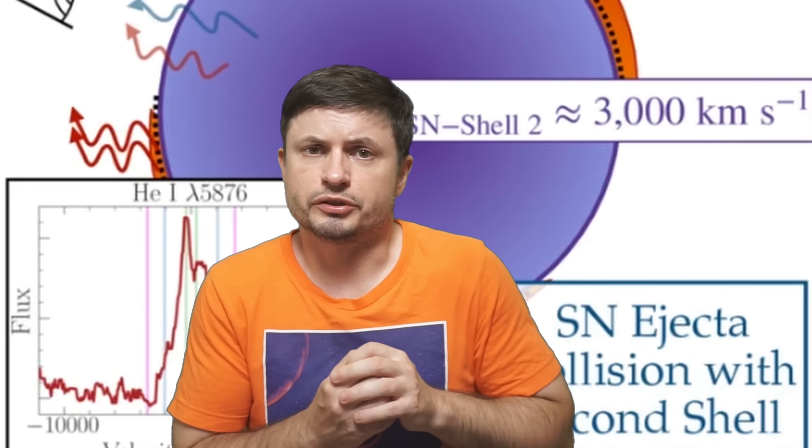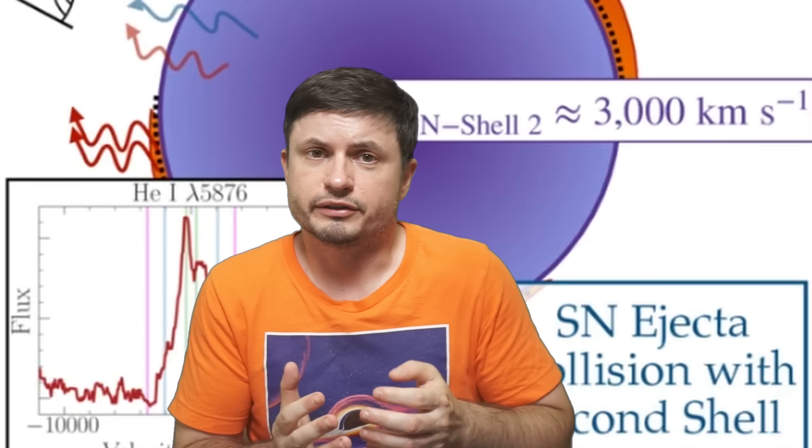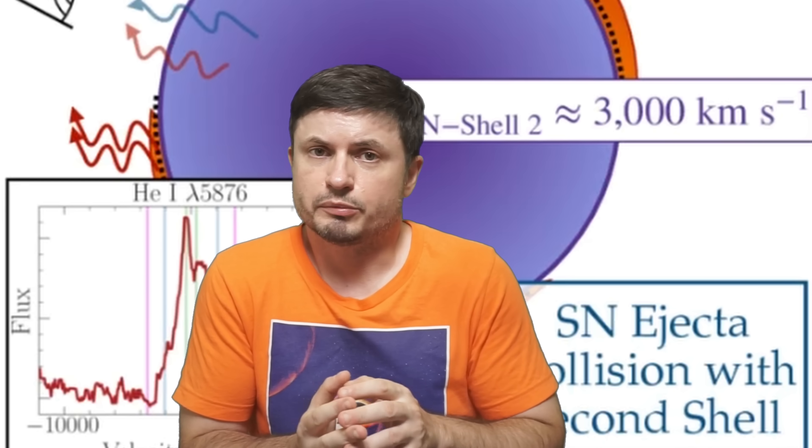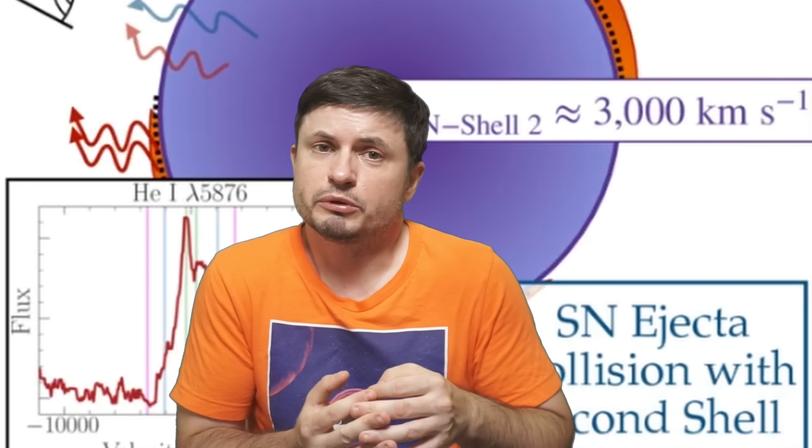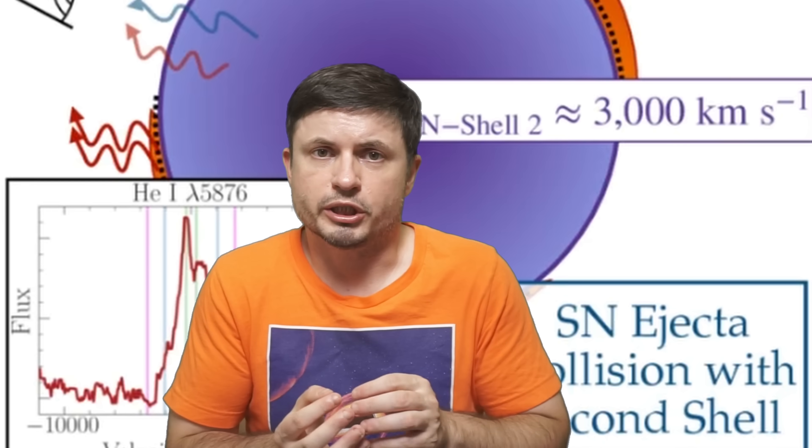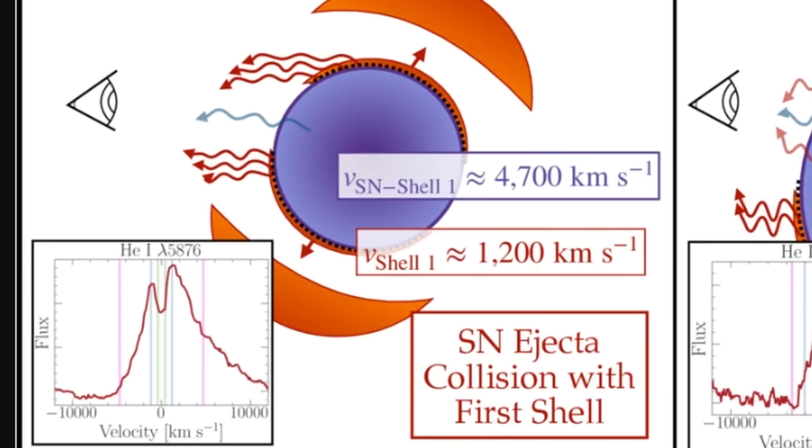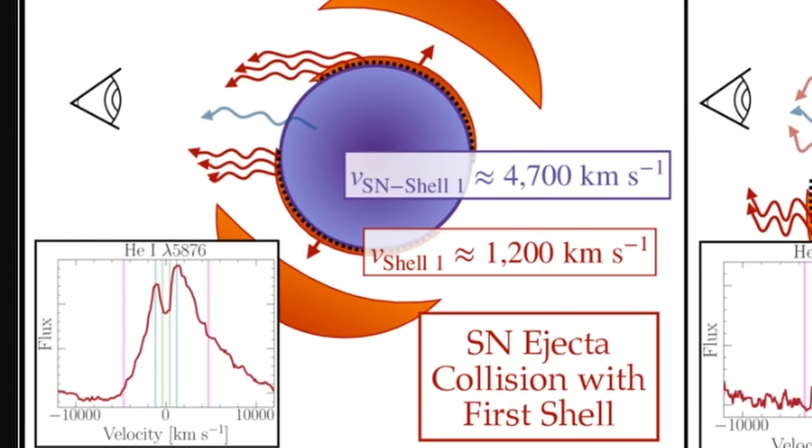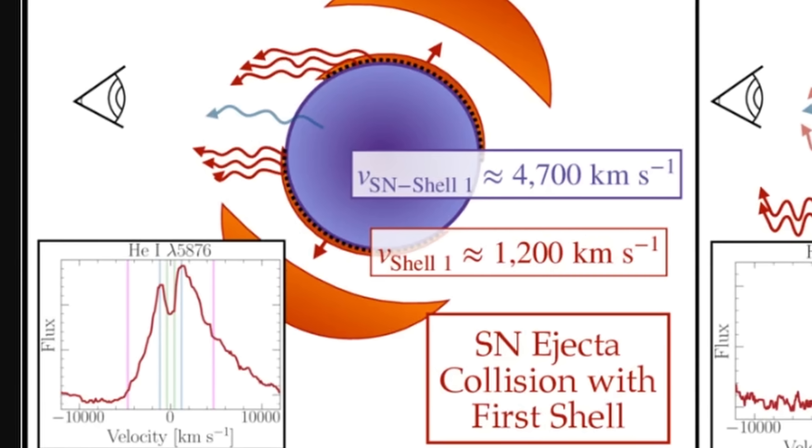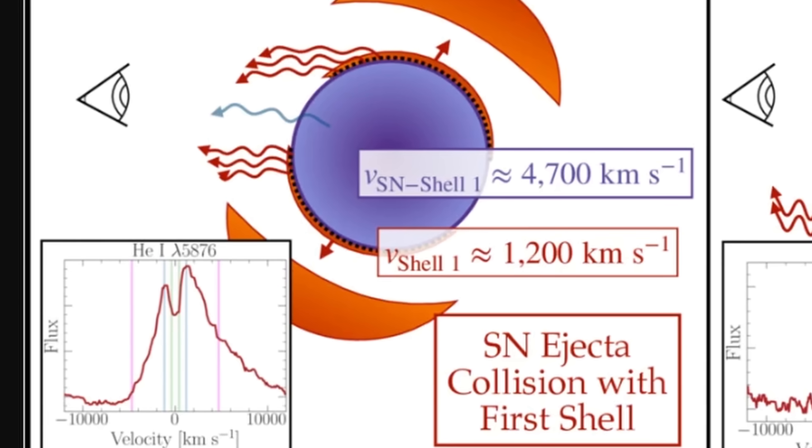And here that second peak happened approximately 220 days after the first peak. And based on the changes in luminosity, and based on how fast the brightness decreased, it even becomes possible to analyze exactly what seems to be happening around this object. For example, the very rapid dimming observed after the second peak suggests that the supernova ejecta very likely passed through this dense cloud pretty quickly.